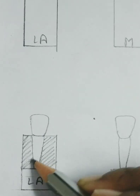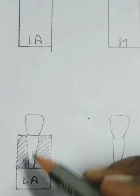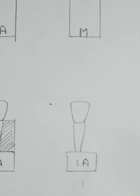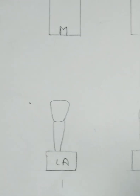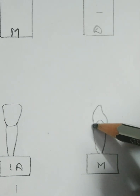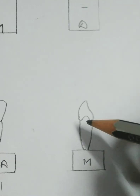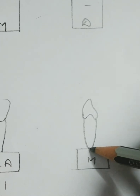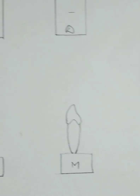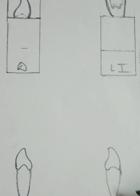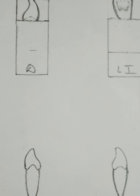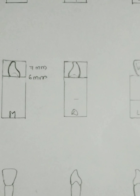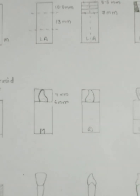After removing the excess part, we will get the perfect crown and root — that will look like this from the mesial aspect and the distal aspect. This was the diagrammatic steps in carving of the maxillary central incisor. Hope you liked it. Don't forget to subscribe.